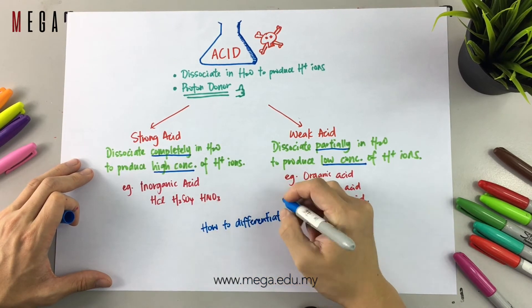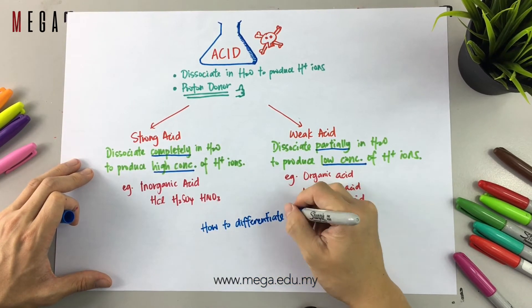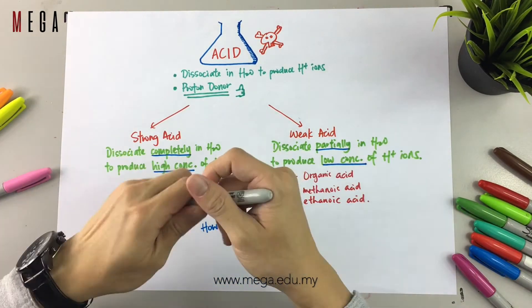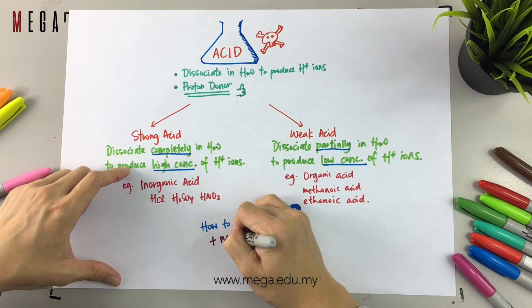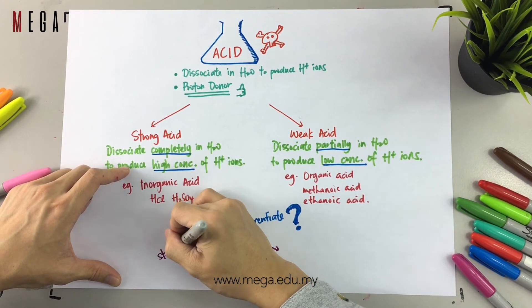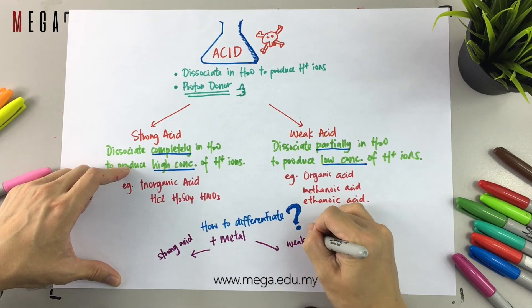Here comes a popular exam question. They will normally ask you, how can you differentiate between strong acid and weak acid? You can test them by using metals because when metal reacts with acid, it will produce salt and hydrogen gas.